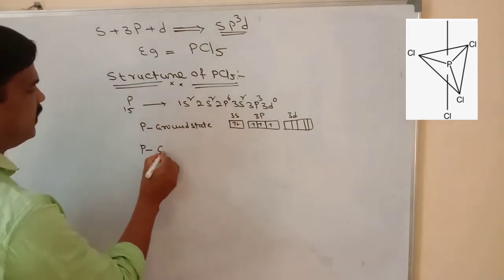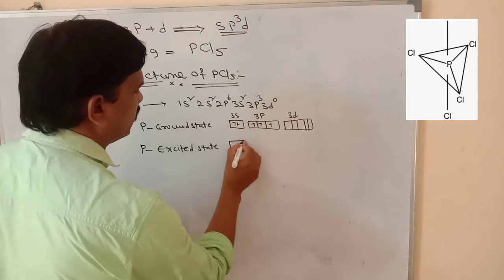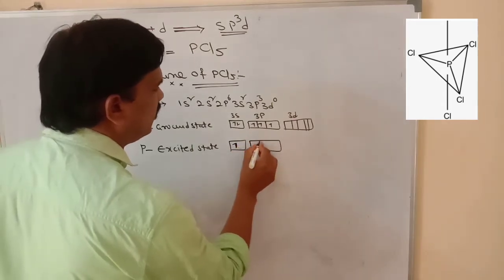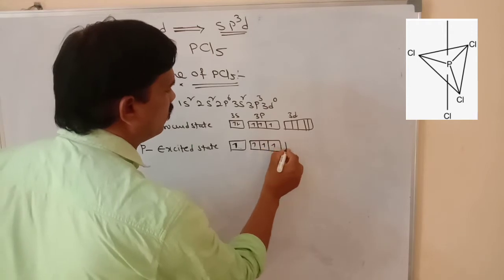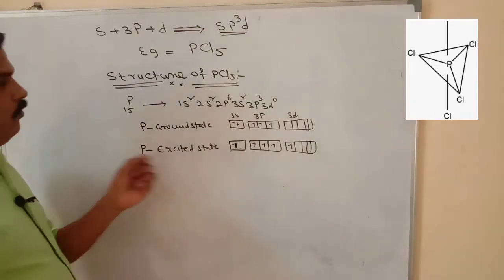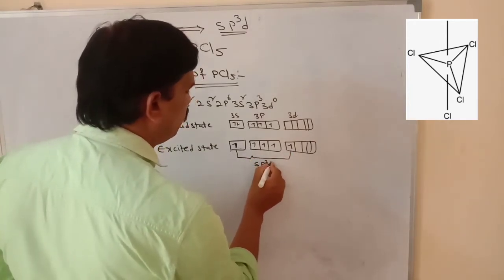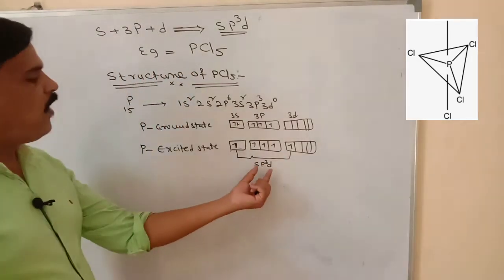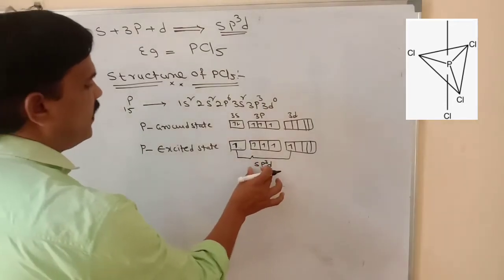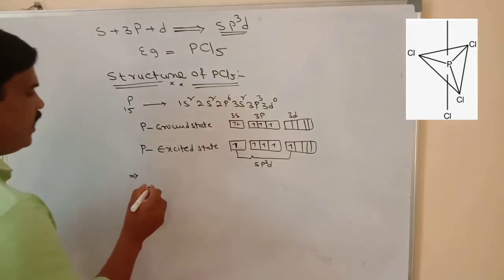Now I want to write the phosphorus excited state electronic configuration. In the excited state, one 3s electron is promoted to the 3d orbital. Then 1s orbital, 3p orbitals, and 1d orbital combine to give equal energy and equal shape — 5 sp3d hybrid orbitals are formed. Unlike atomic orbitals, these hybrid orbitals participate in chemical reactions very frequently.